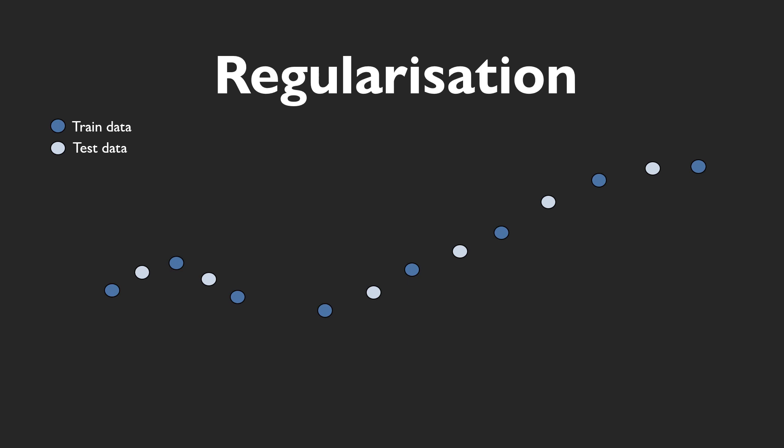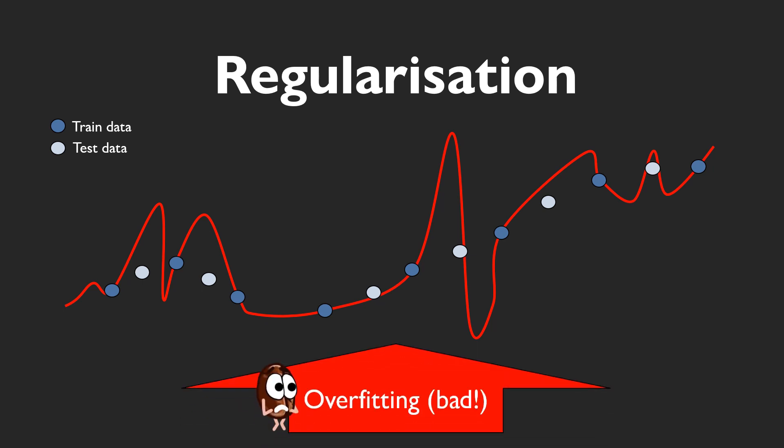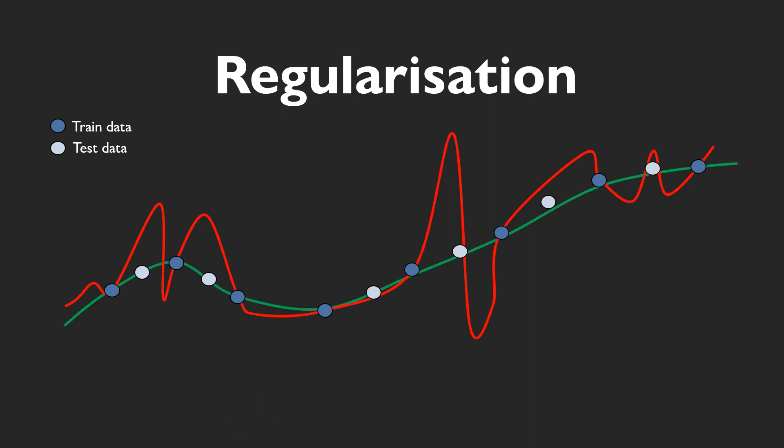As a simple example, consider fitting a function through these given points. While the red curve does hit every sample point, it generalizes badly for the samples not seen during training. It is overfitting. A regularization term here could enforce smoothness, giving you that nice green curve that you can see.